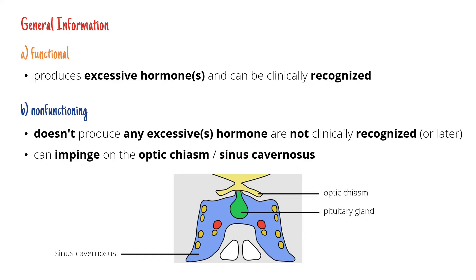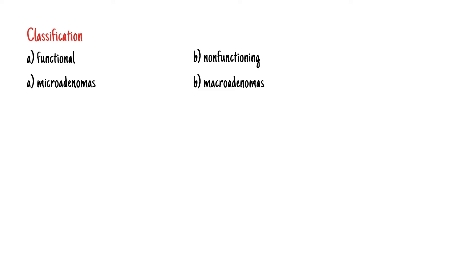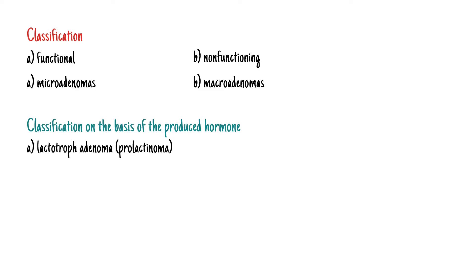We divided pituitary adenomas into functional and non-functioning, and micro and macro adenomas. We can also divide them on the basis of the hormone that they produce excessively. If they produce prolactin, then we talk about a lactotroph adenoma, or a prolactinoma.